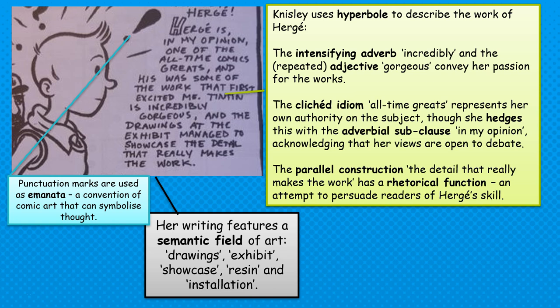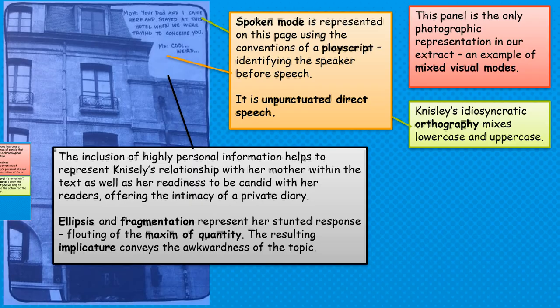We could also point out Tintin's emanata — the use of punctuation marks around his head — a distinctive style and part of her visual tribute to Tintin. There's also a semantic field within this extract connected to art and comics: we have 'drawings,' 'exhibit,' 'showcase,' 'resin,' and 'installation,' as she talks about artworks she's seen in the Pompidou Centre. Clearly Nisley is someone who understands the language of art, and this also reflects in her audience — probably broadly culturally aware people interested in different forms of creativity and artistic expression.